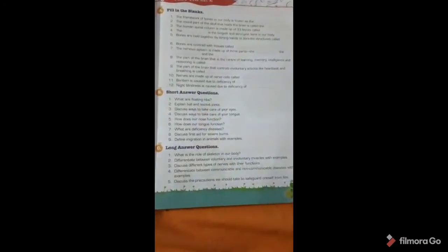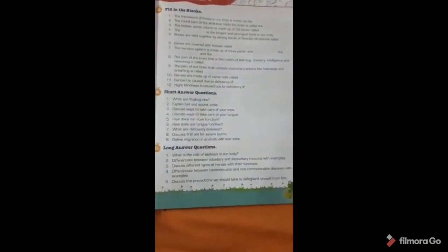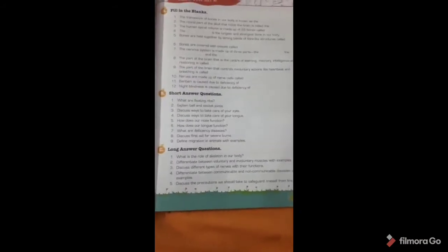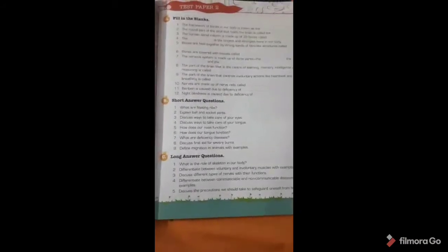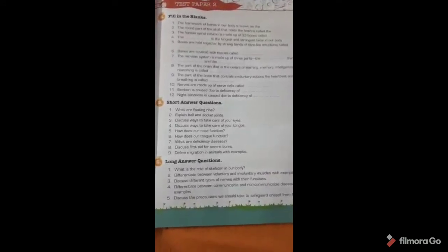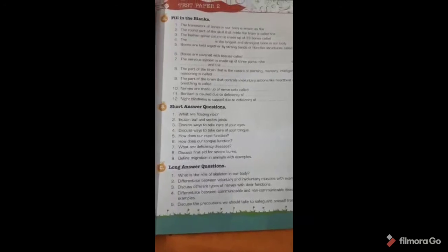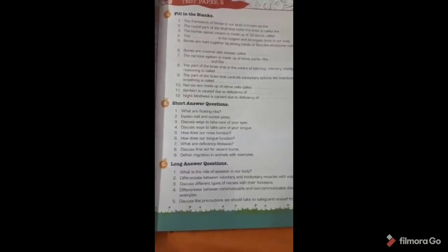Our first question is, what are floating ribs? The ribs are 24 in number, there are 12 pairs of ribs, and the last 2 pairs of ribs that are not attached to the sternum are called floating ribs. This means that 10 pairs of ribs are attached to the sternum, while 2 pairs are not attached, so they are called floating ribs.